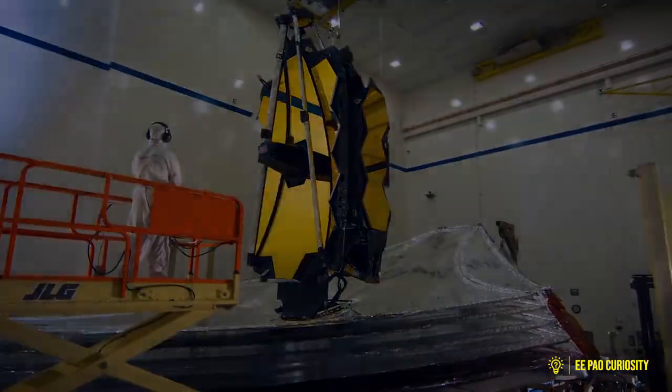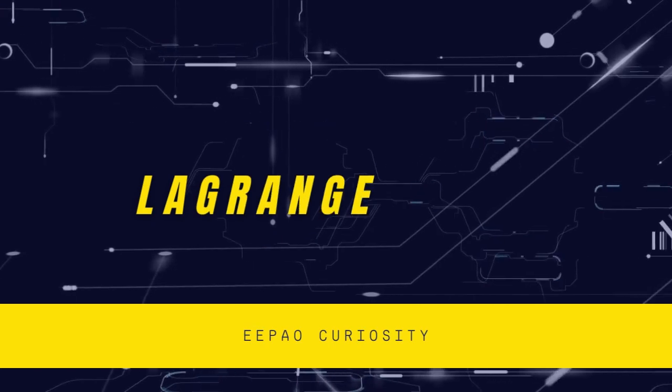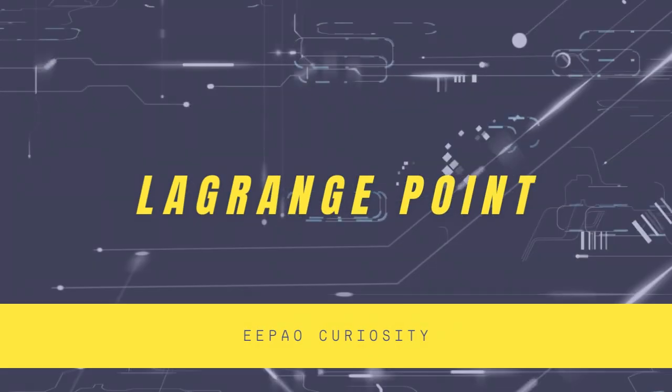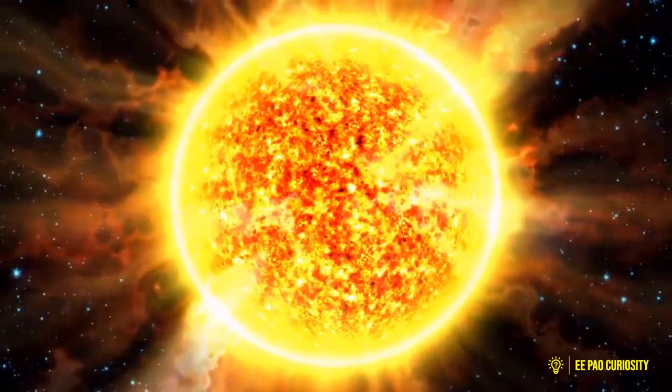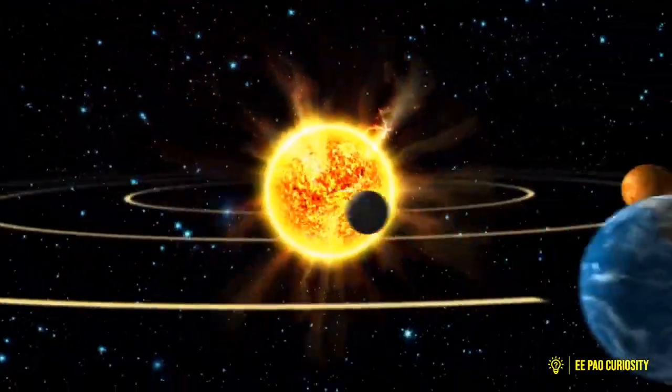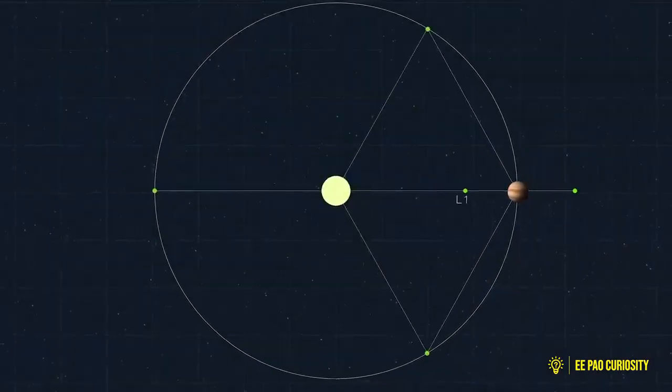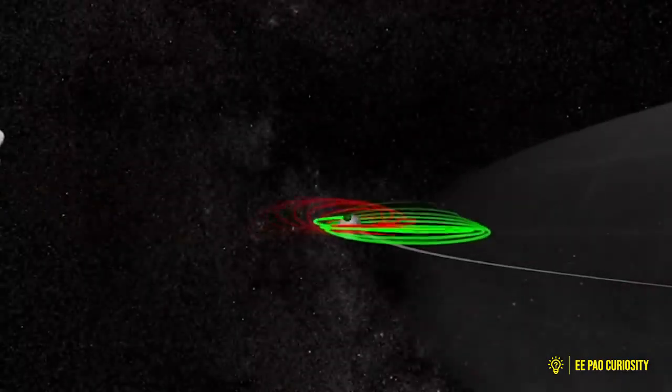Before continuing further, let us understand in brief what a Lagrange point is. A Lagrange point is a point somewhere in empty space within a system of two massive objects where their gravitational pull cancels each other out.